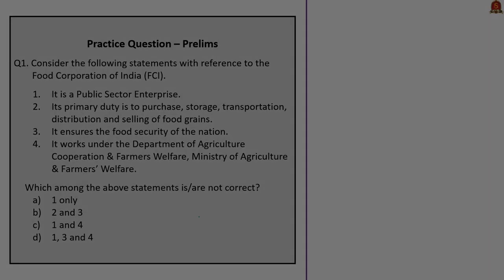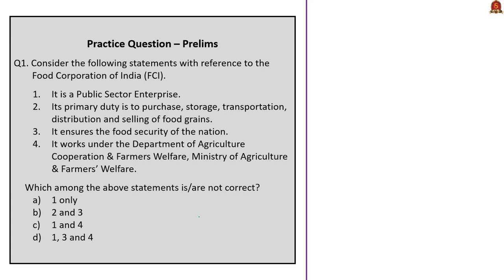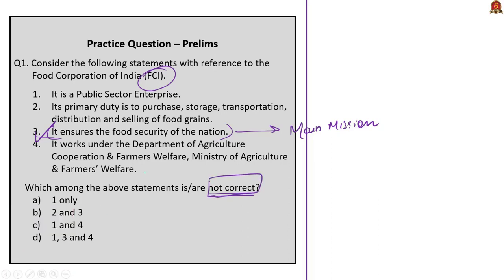Let's discuss our first question, which is about the Food Corporation of India. Statement 3 states that FCI ensures the food security of the nation — this is correct, as food security is one of the main missions of FCI. The question asks for the incorrect statement, so statement 3 cannot be in the final option. Options B and D contain statement 3, so we can directly eliminate them, leaving us with options A and C.